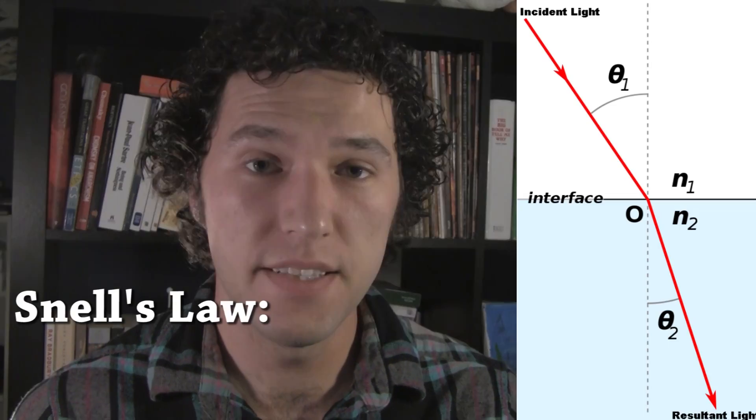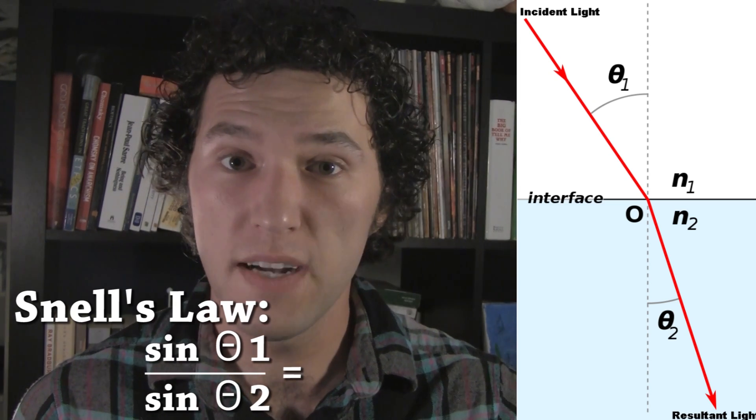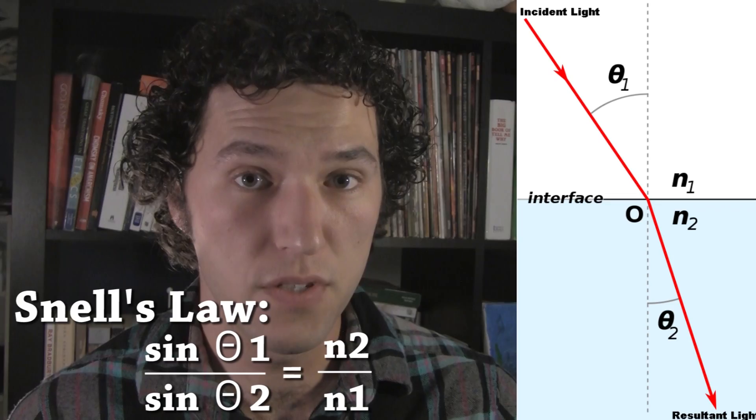Snell's Law concerns itself with how light is refracted or bent when it crosses the boundary between two different media, like air and water, or water and glass. It says that the sine of the angle of incidence over the sine of the angle of refraction equals the refractive index of the second substance over the refractive index of the first substance. The refractive index is a unitless quantity found experimentally and based on the measurement of a certain wavelength of light. Things with a higher refractive index tend to slow light down more, and it's this change in the speed of light that causes light to bend when it crosses the boundary between two substances with different indexes of refraction.